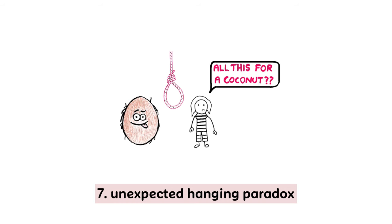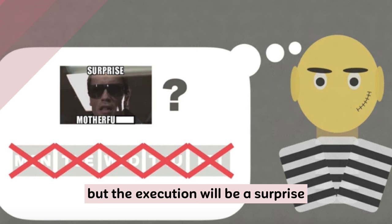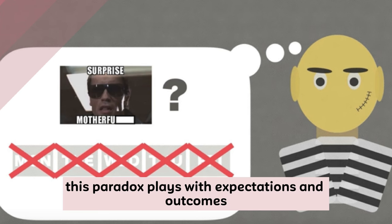7. Unexpected Hanging Paradox. A prisoner is told he will be hanged on a weekday, but the execution will be a surprise. Can it happen on Friday? This paradox plays with expectations and outcomes.